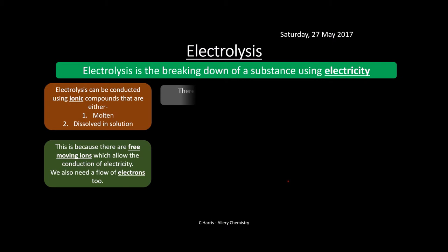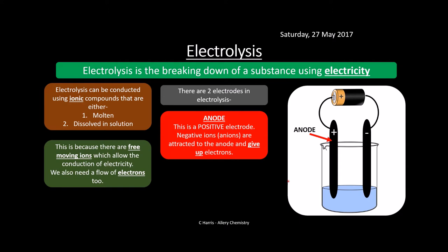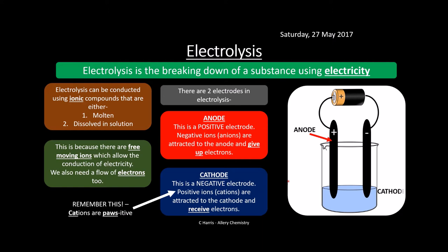In electrolysis there are two electrodes. The anode is the positive electrode and negative ions — anions — are attracted to it and give up electrons. The cathode is the negative electrode and positive ions — cations — are attracted to it and receive electrons. You can remember this as cations are positive, a bit like cats and paws, so cations are positive and anions are negative.